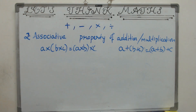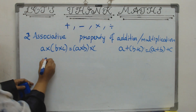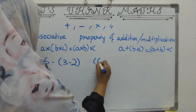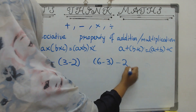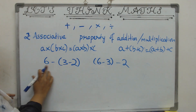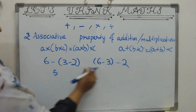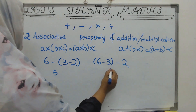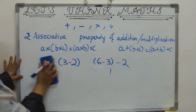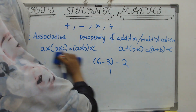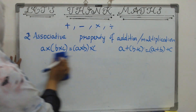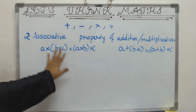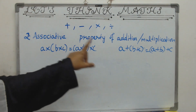Does that mean it is not the same for subtraction and division? Yes, you are right — you will get different answers. For example, taking the last two numbers: 6 minus 1 will be 5. But taking the first two numbers: 3 minus 2 will be 1. So this does not work. The associative property does not work for subtraction or division; it works only for multiplication and addition.